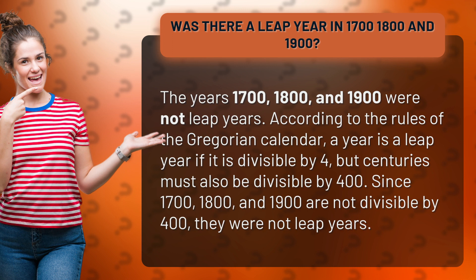According to the rules of the Gregorian calendar, a year is a leap year if it is divisible by four, but centuries must also be divisible by 400. Since 1700, 1800, and 1900 are not divisible by 400, they were not leap years.